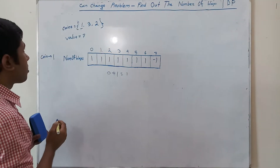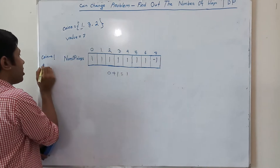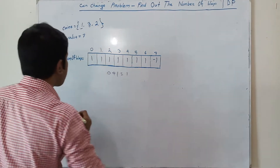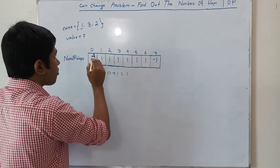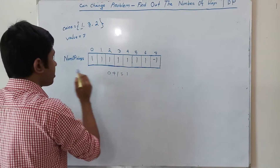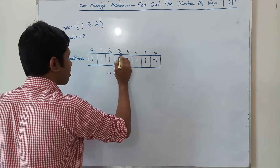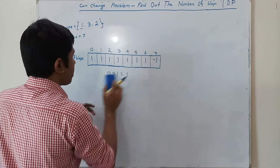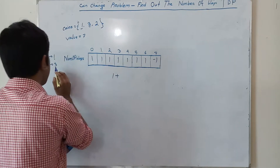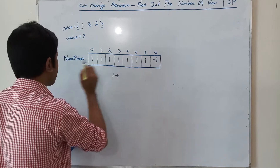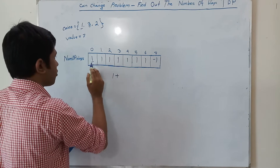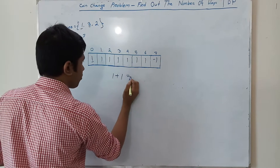Now we will use coin 3. We cannot use coin 3 for values 0, 1, and 2 because those values are less than 3. When we have value 3, the existing number of ways is 1, plus by using coin 3 the number of ways for 3 minus 3 equals 0, which is 1. So the total number of ways here will be 2.